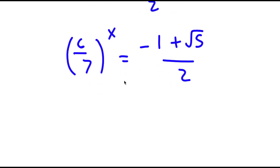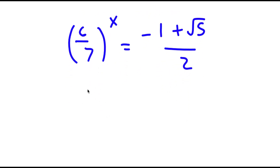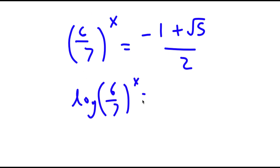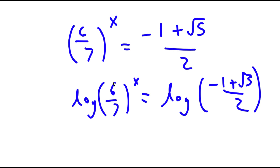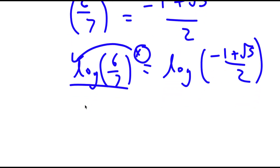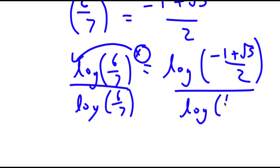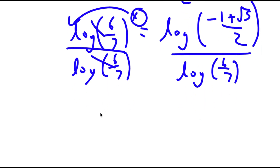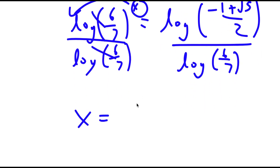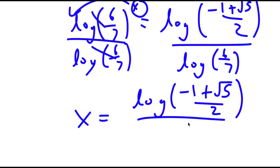I'm going to take the log on both sides. So now I have log of 6 over 7 to the power of x is equal to log of negative 1 plus the square root of 5 over 2. I can move the x to the front, so x times log of 6 over 7 is equal to log of negative 1 plus the square root of 5 over 2, divided by log of 6 over 7.